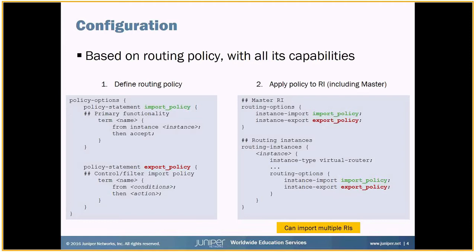That's the primary functionality of instance import. If we want to control or filter what's being shared across the routing instances, we look at the export policy statement. This is the control or filtering mechanism and works like a regular routing policy. Inside the term, the 'from' statement can use any condition you want — a particular protocol, a route filter, anything you'd normally use for routing policy configuration. The 'then' statement uses the action to accept or restrict routes as appropriate. You can create more than one term, and when done, apply that policy statement to the instance export statement.